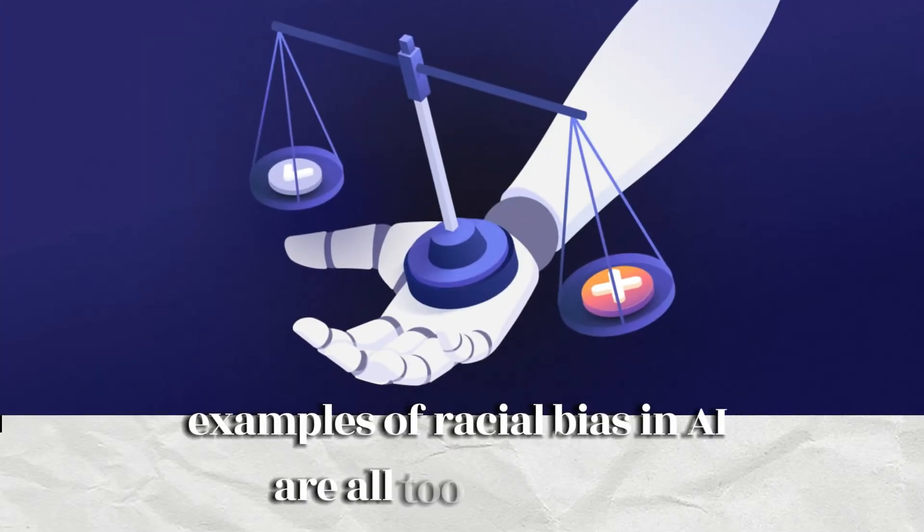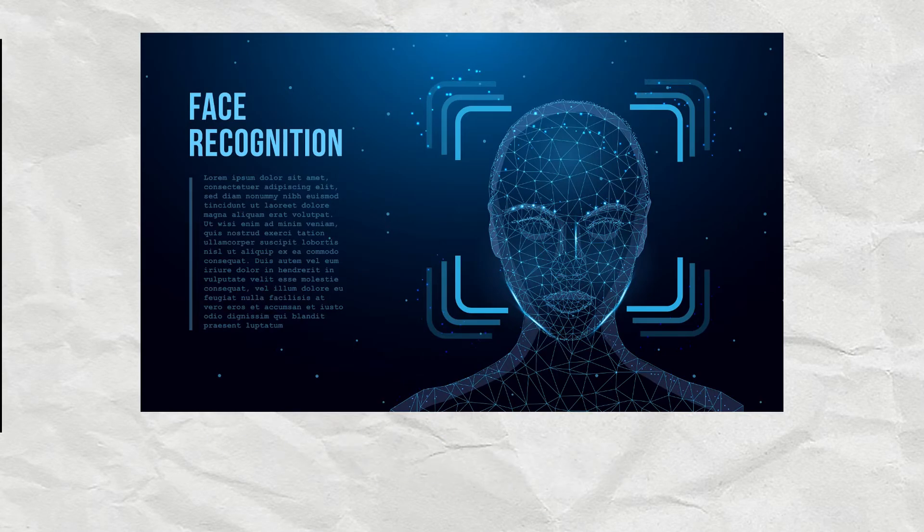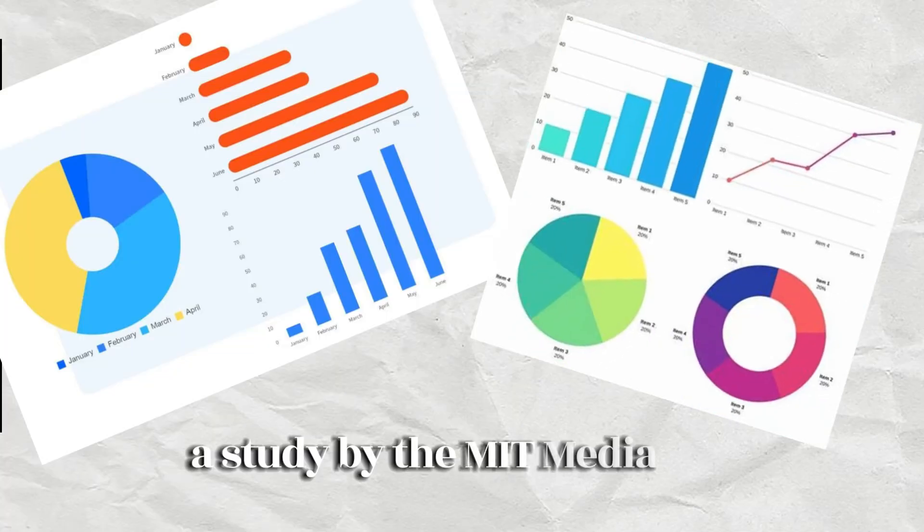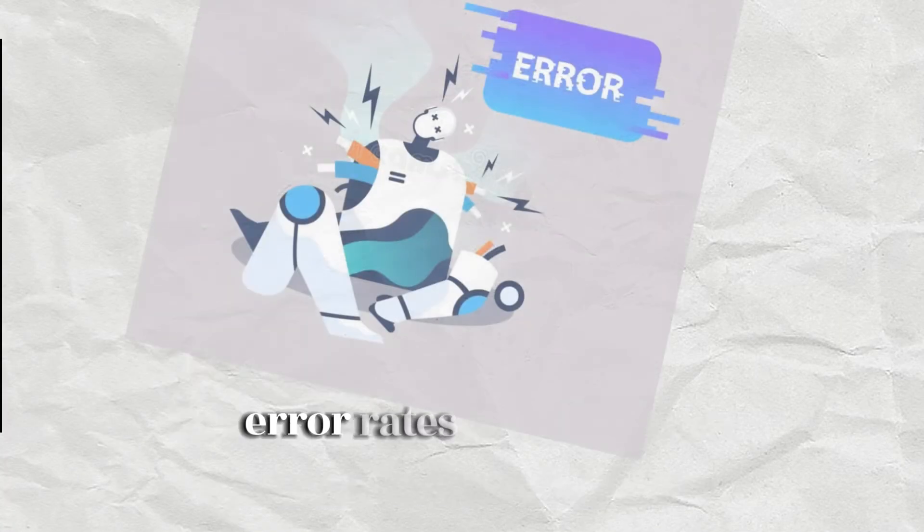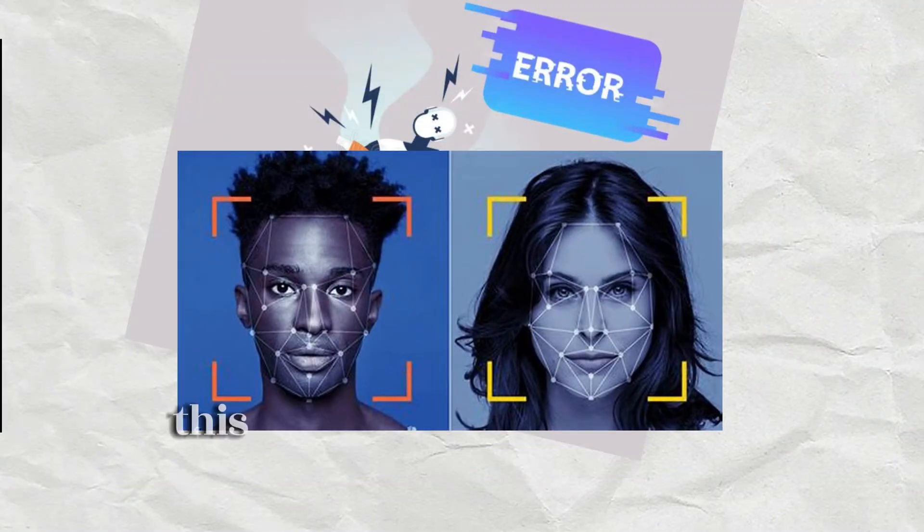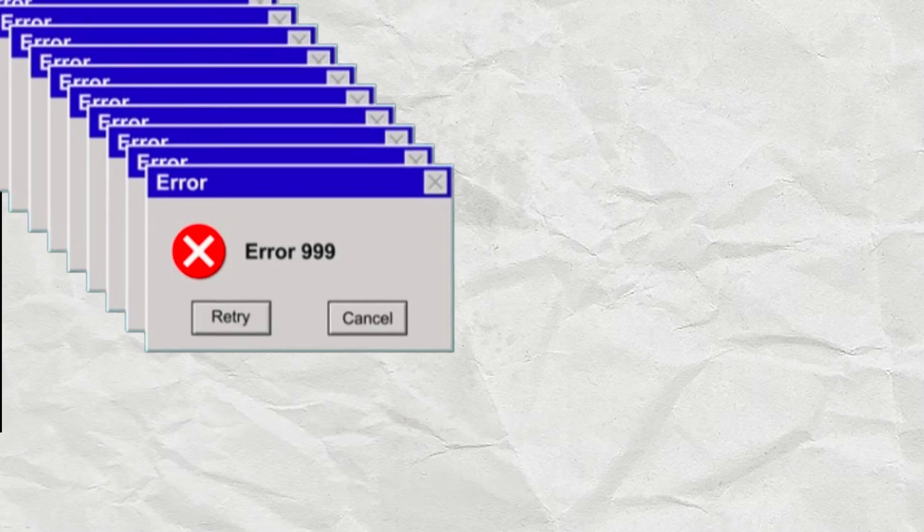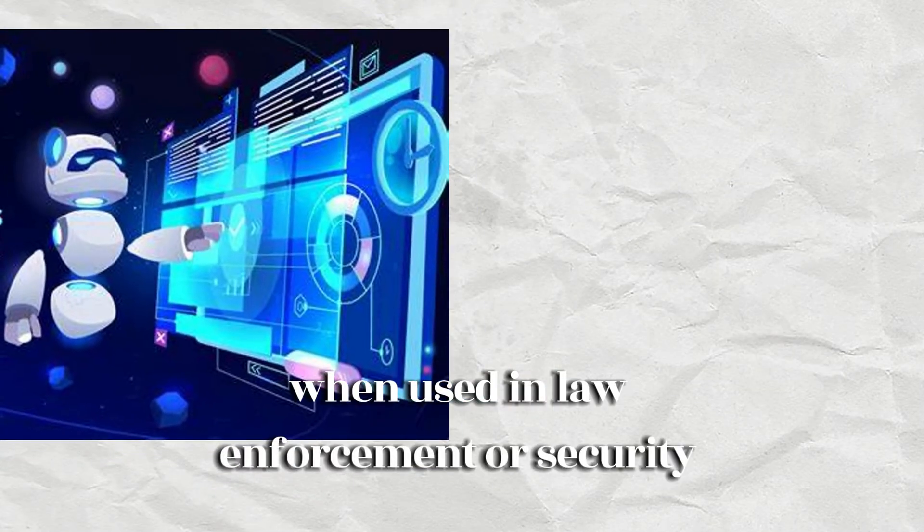Unfortunately, examples of racial bias in AI are all too common. Let's look at a few. Facial recognition: A study by the MIT Media Lab found that facial recognition systems had much higher error rates for darker-skinned individuals, especially women. This means these systems are less accurate and potentially harmful when used in law enforcement or security applications.